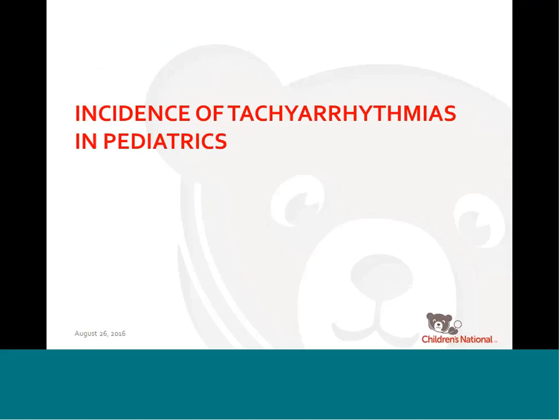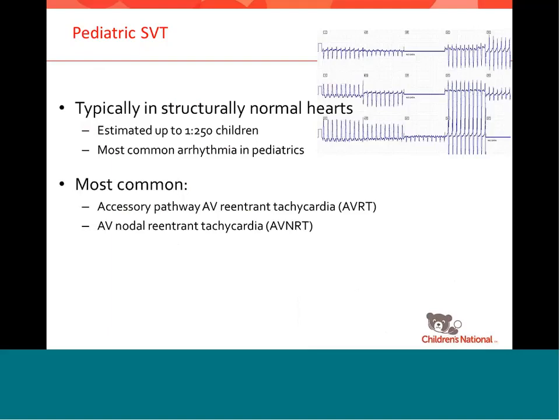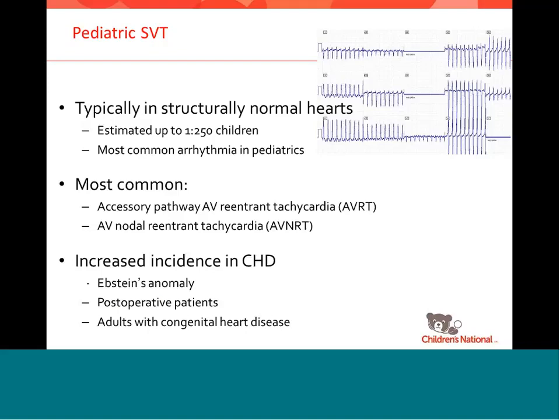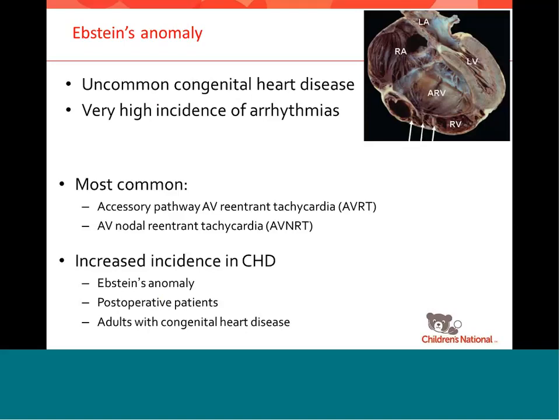SVT is estimated to occur in as many as 1 in 250 children, and these kids typically have structurally normal hearts. Most commonly it's AV reentrant tachycardia — either through an accessory pathway (AVRT) or AV nodal reentrant tachycardia (AVNRT). It also occurs with increased frequency in congenital heart disease and post-operative patients, where pressure, volume, stretch load, or scar tissue may be contributing factors.